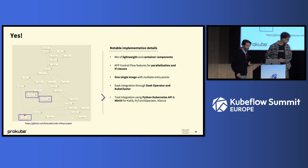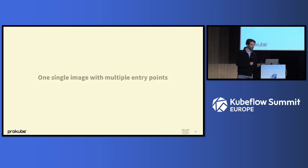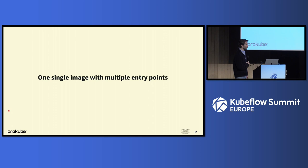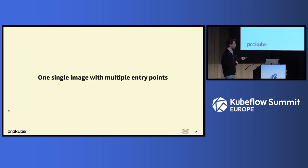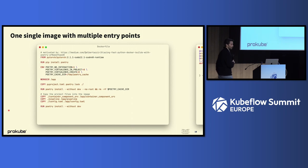Thank you, Christian. Now that we know how our pipeline looks on a higher level and what our core implementation features are, I'd like to highlight a few details. The first is that we use only one image with multiple entry points — for example, in all our container components for KFP. We actually use this image everywhere we need custom images: Katib training trials, Dask workers, distributed PyTorch training, and even KServe for the custom predictors and transformers. So in our repository, you will only find one single Dockerfile.